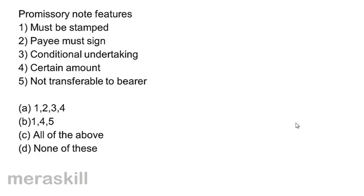Promissory note features: 1) must be stamped, 2) payee must sign, 3) conditional undertaking, 4) certain amount, 5) not transferable to bearer. Five features have been given. What are the promissory note features? Options: A) 1, 2, 3, 4; B) 1, 4, and 5; C) all of the above; D) none of these.